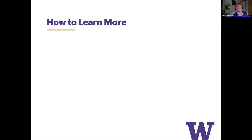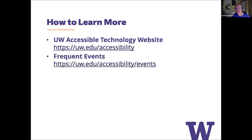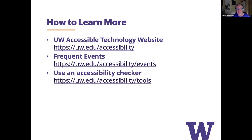To learn more, our website is designed specifically for that purpose — go to uw.edu/accessibility. There you'll find information about accessible technology for websites, documents, videos, online courses, meetings, and more. We also have frequent events for deeper dives or one-on-one interaction. You can access a current list of upcoming events at uw.edu/accessibility/events. You can also use an accessibility checker or other accessibility-related tools, and there is a comprehensive annotated list at uw.edu/accessibility/tools.